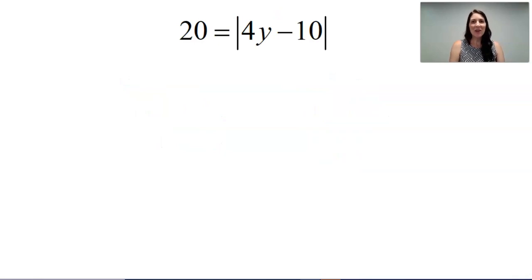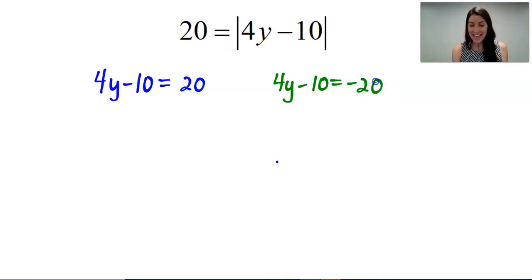Now, in this example, I don't want you to be alarmed if you see the constant, in this case 20, on the left-hand side of the equation. We still have an absolute value equal to a constant. So in this case, the expression 4y minus 10 is 20 units away from 0. Therefore, 4y minus 10 could be equal to positive 20, or 4y minus 10 could be equal to negative 20 because both 20 and negative 20 are 20 units away from 0. And this is an absolute value problem.